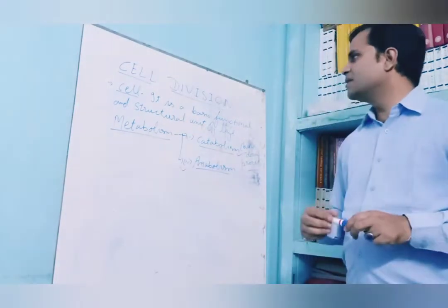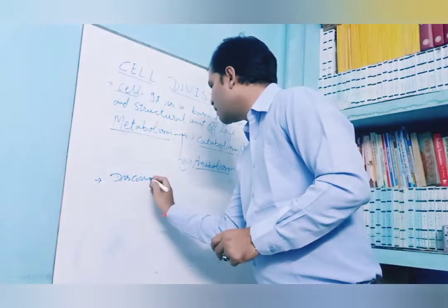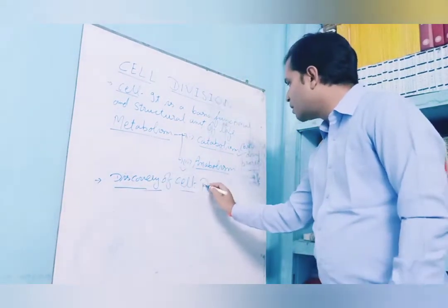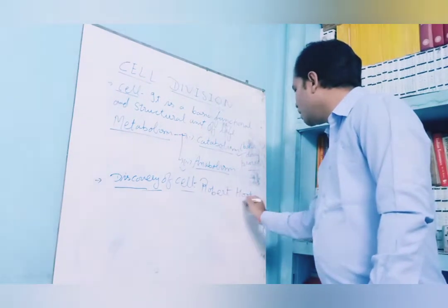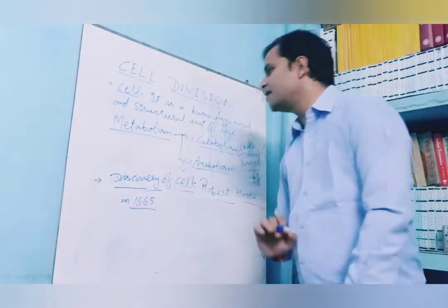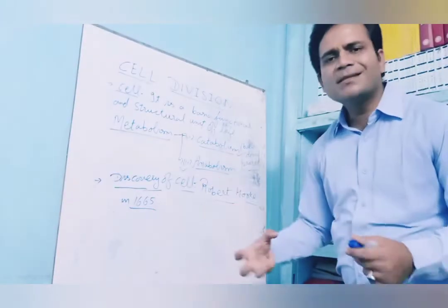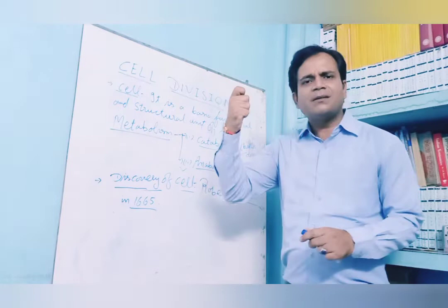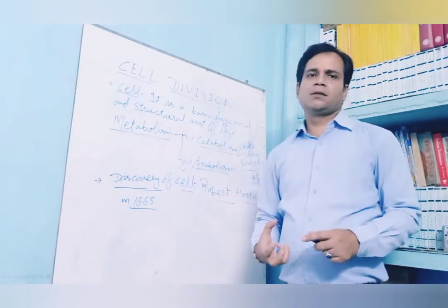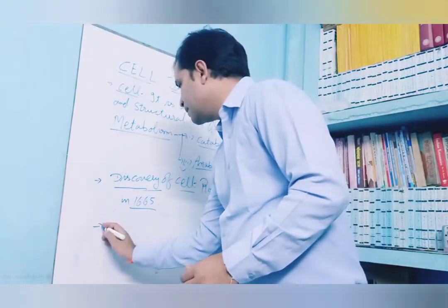Now, regarding the discovery of the cell — you may have heard the name of the scientist Robert Hooke. In 1665, Robert Hooke discovered the cell. He suggested that cells are room-like structures, also known as beehives. So the discovery of the cell is credited to the scientist Robert Hooke.